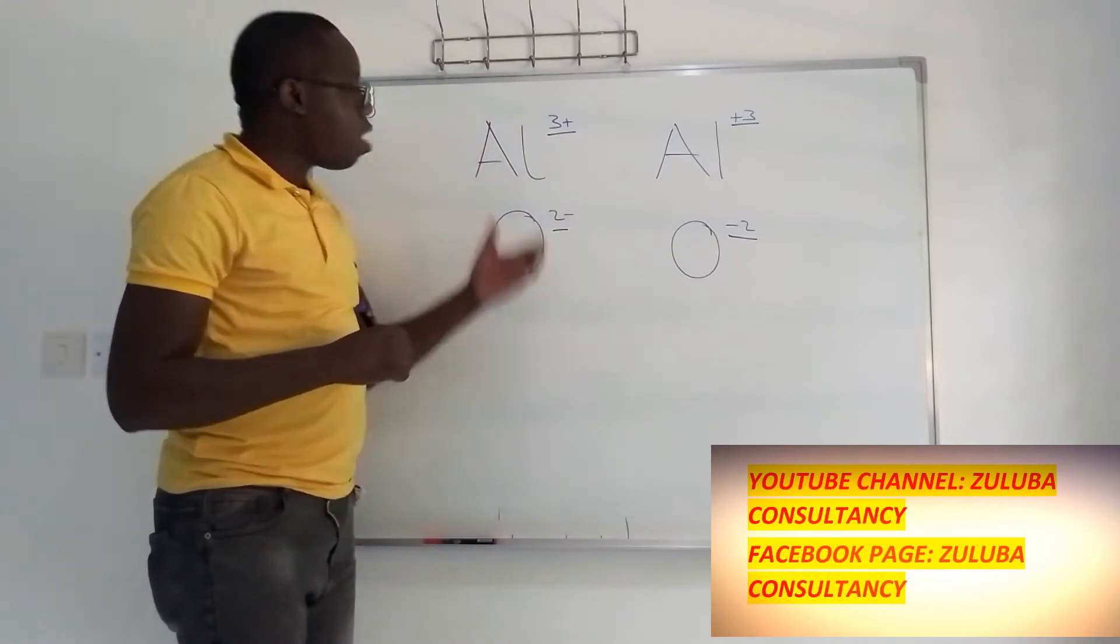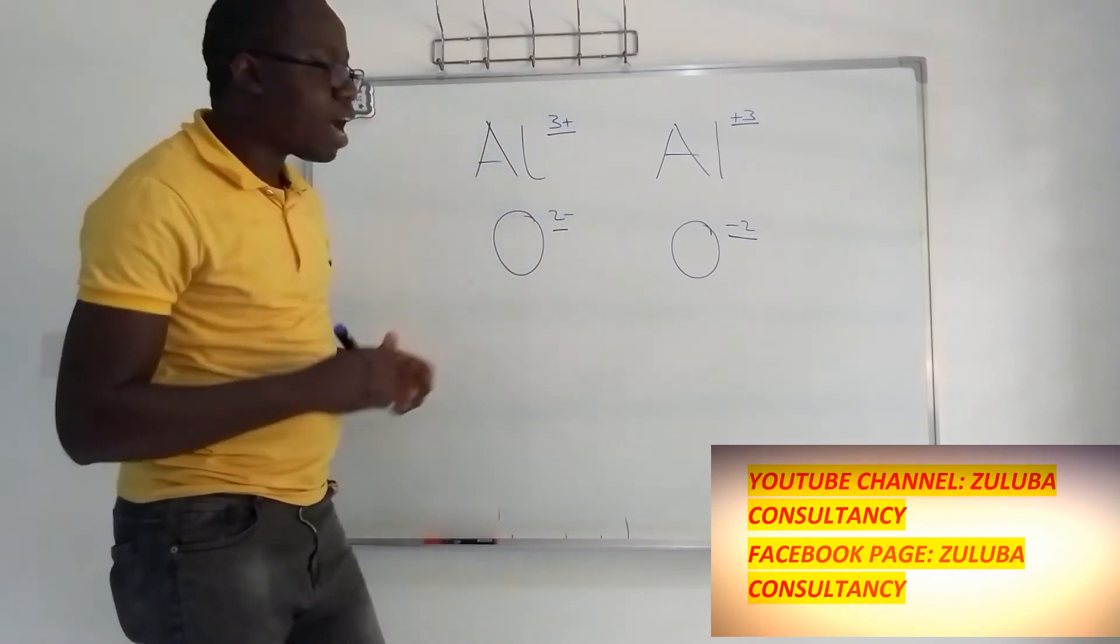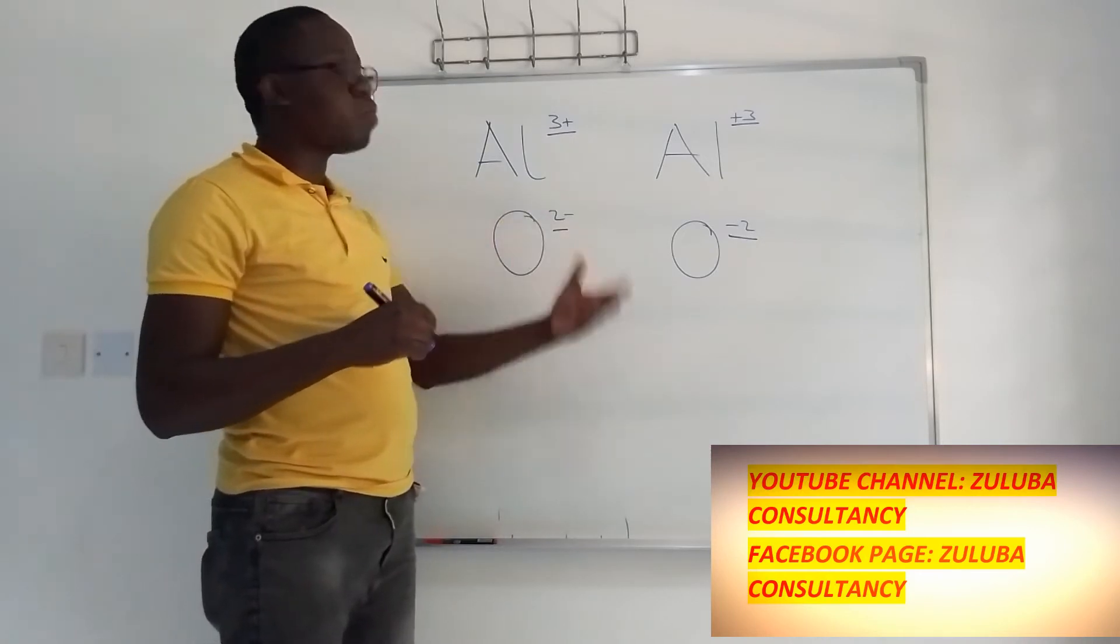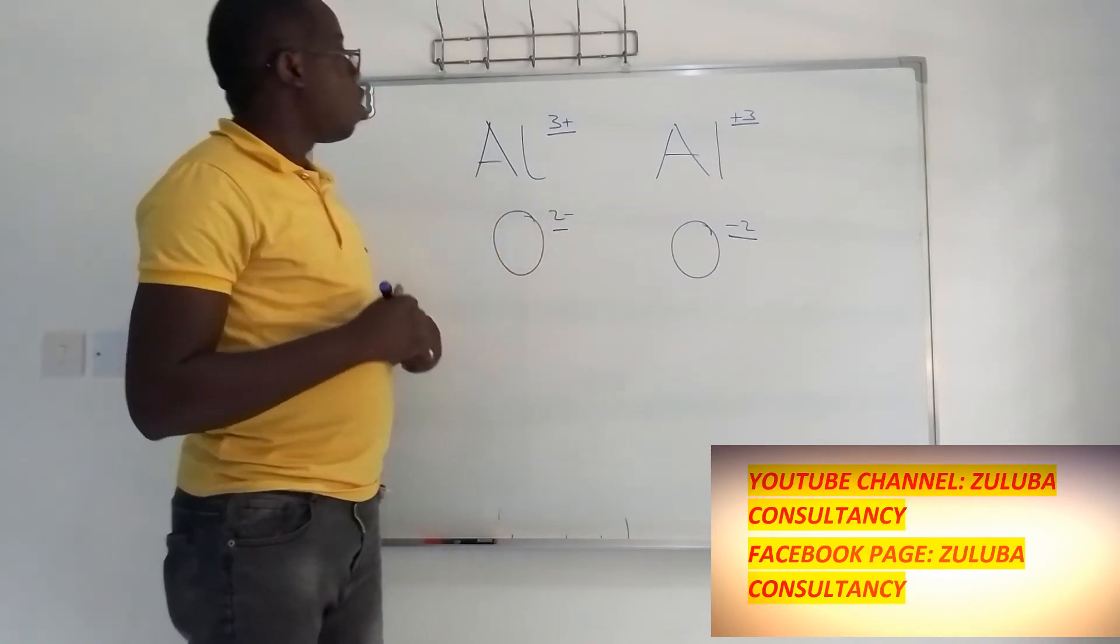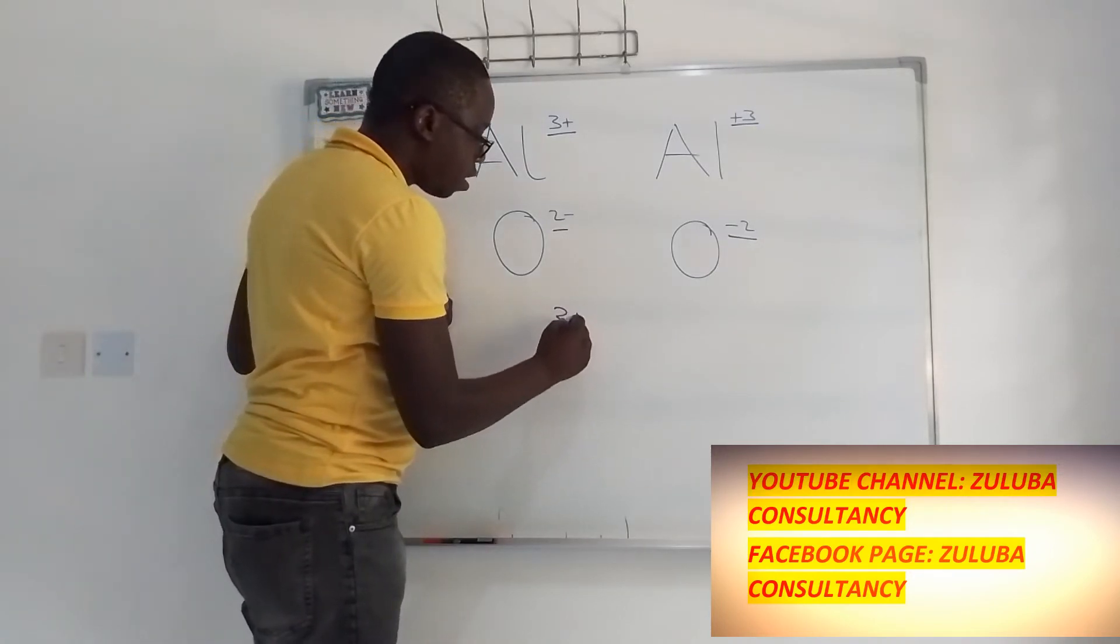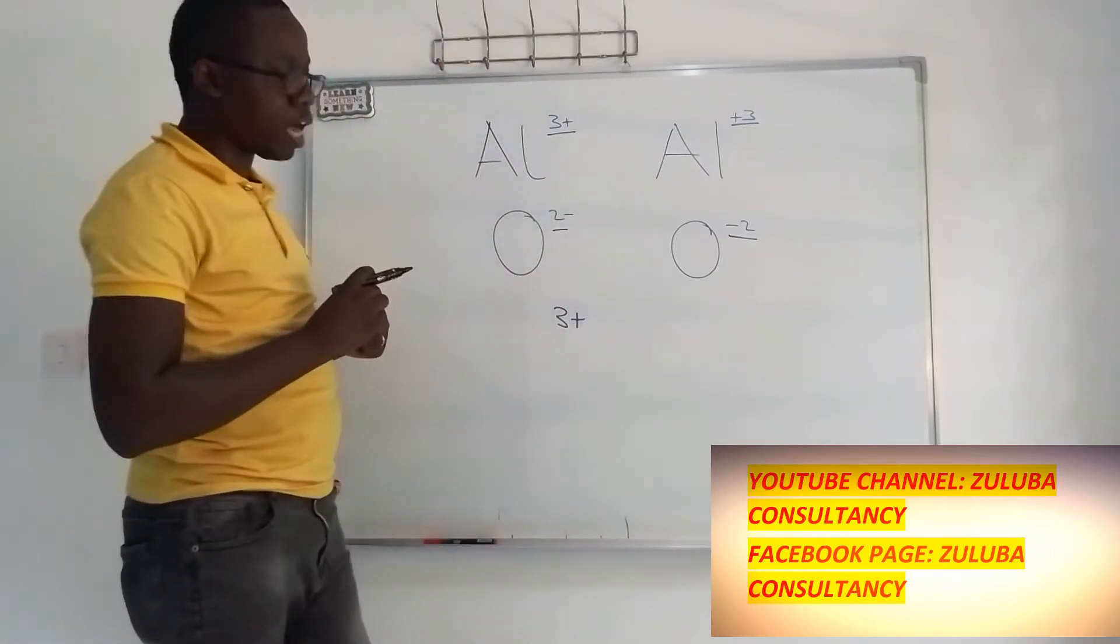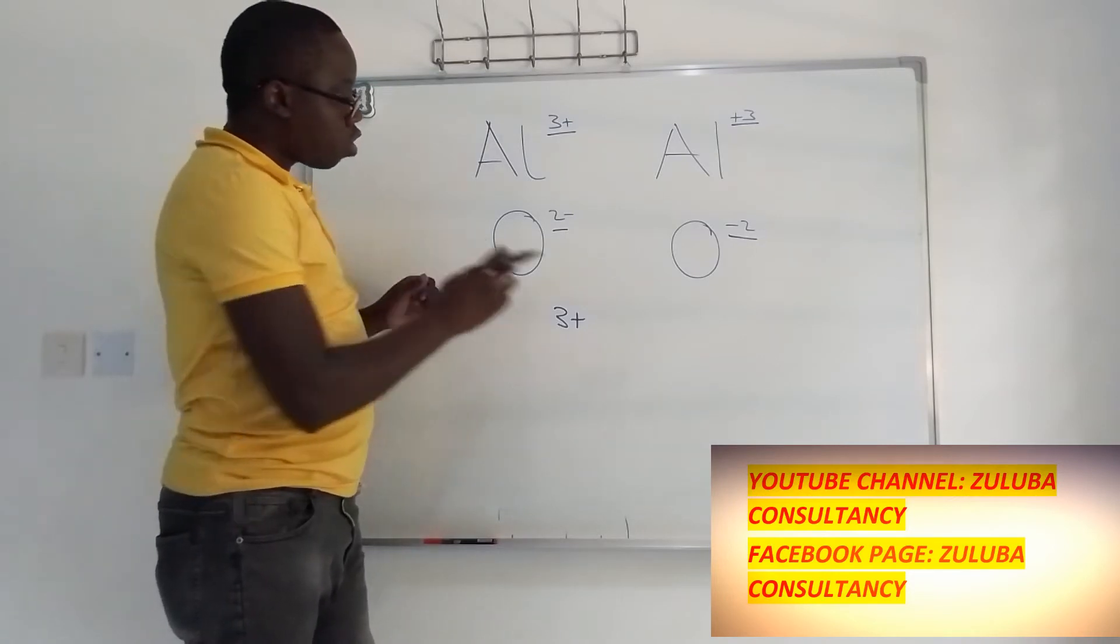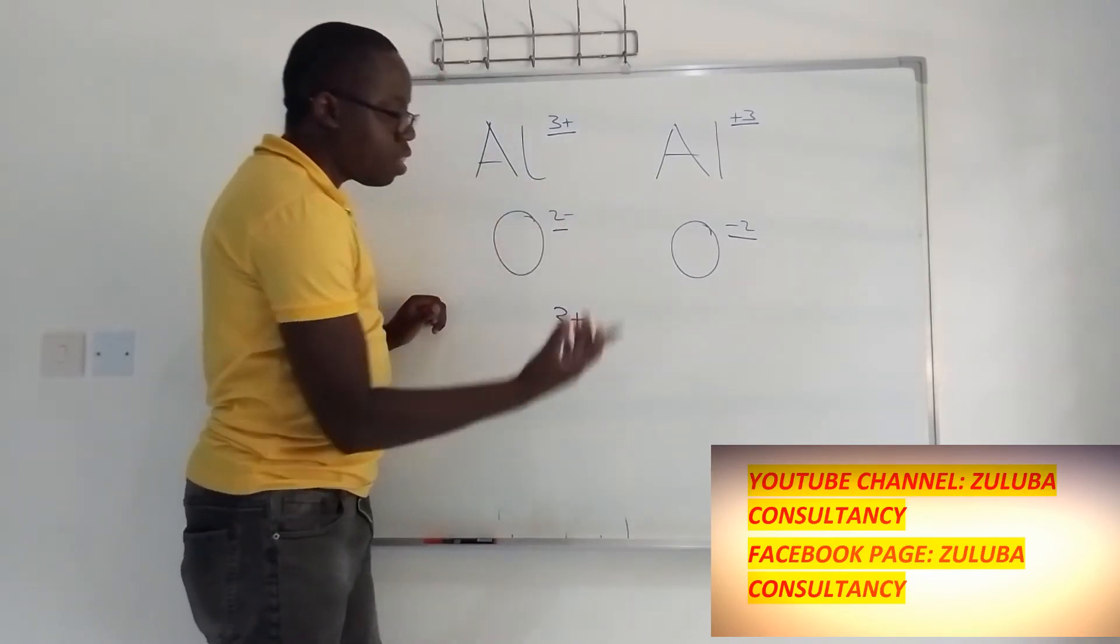While if it has lost electrons, it becomes an ion that is positively charged. So how do we denote these ions that are negatively and positively charged? Well, we use the number then the symbol to show the charge. So you start with the number then the symbol.